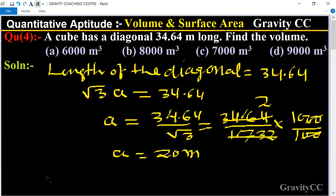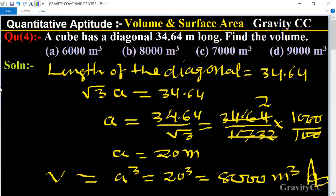So the volume equals a³ = 20³ = 8000 m³, which is the required answer. Option B is the correct answer.